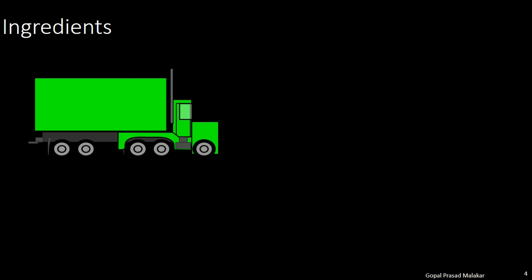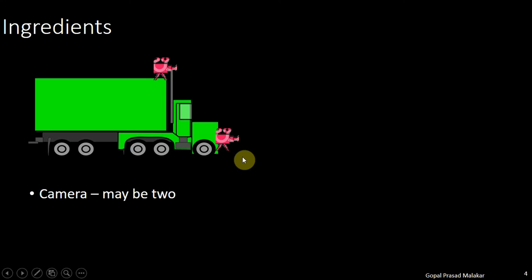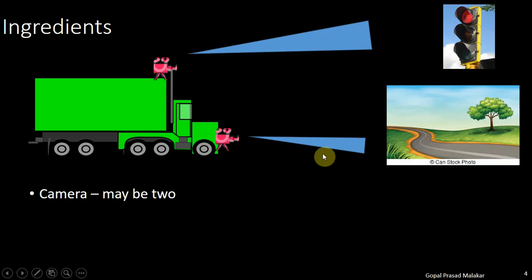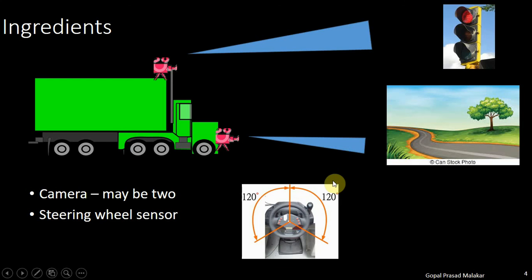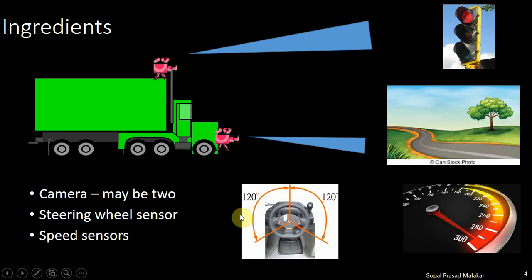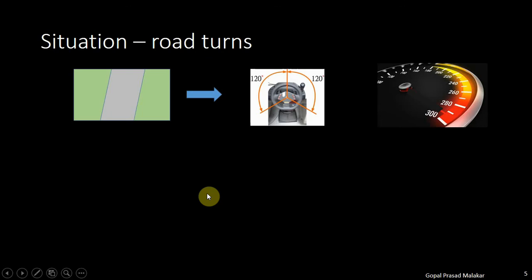Let's take a scenario. What are the ingredients required? Simplistically, it will require cameras — maybe two: one to read traffic signs and another to read the road situation. Then a steering wheel sensor which can record at what angle the steering wheel is, as well as a speed sensor to record the speed. If you are on a road, by looking at the edge differences from both sides of an image you can determine the angle of the road, and then you can record what angle has been taken by the steering wheel.